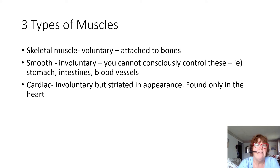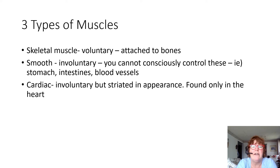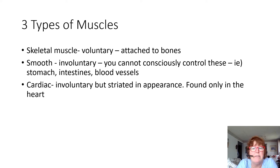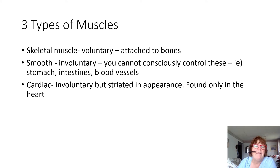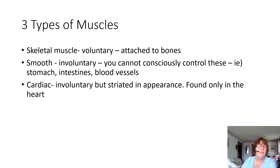Smooth muscle is involuntary. Skeletal muscle is voluntary and attached to bones. Smooth muscle we cannot consciously control — stomach, intestines, blood vessels. Cardiac muscle is involuntary but striated in appearance, only found in the heart. It is the only involuntary striated muscle. When you're eating roast beef you'll see it has strips — that's skeletal muscle. And if you have a good sausage made at the butcher shop, you will see that typically it has smooth muscle as the intestine lining.